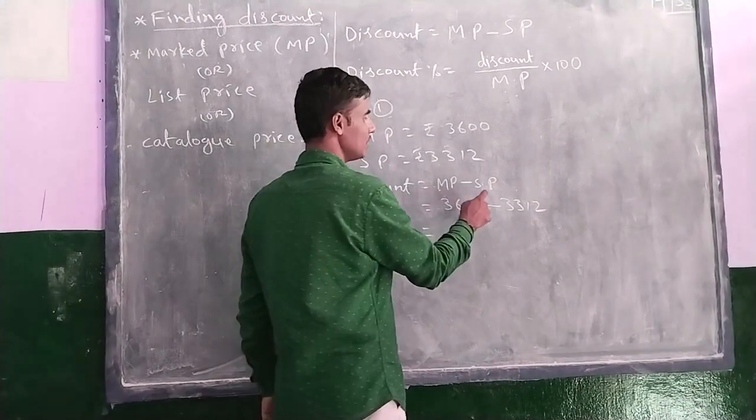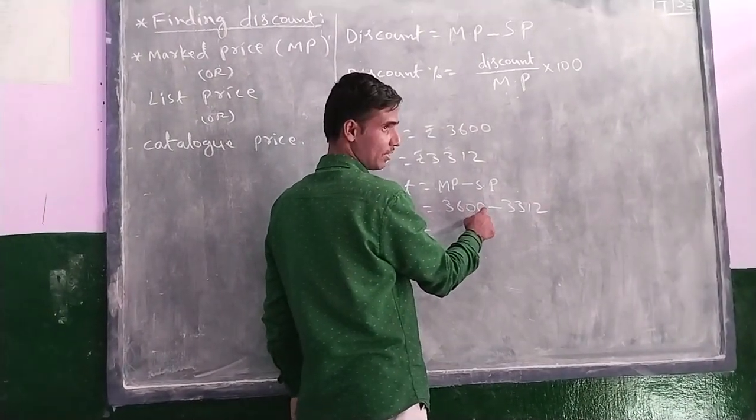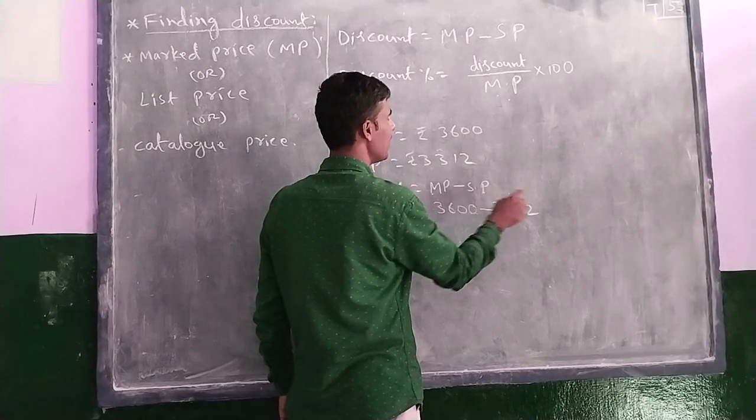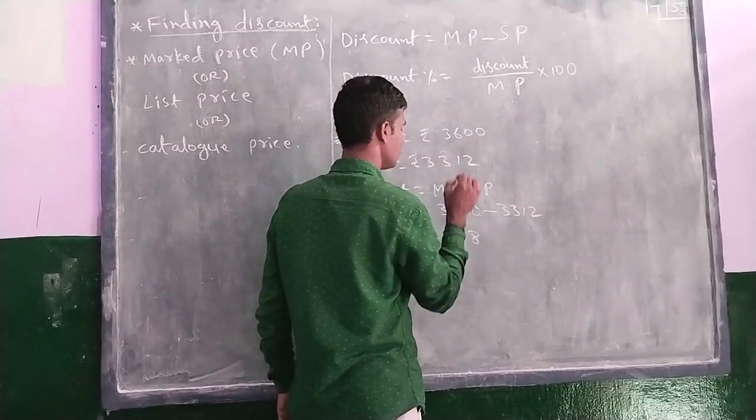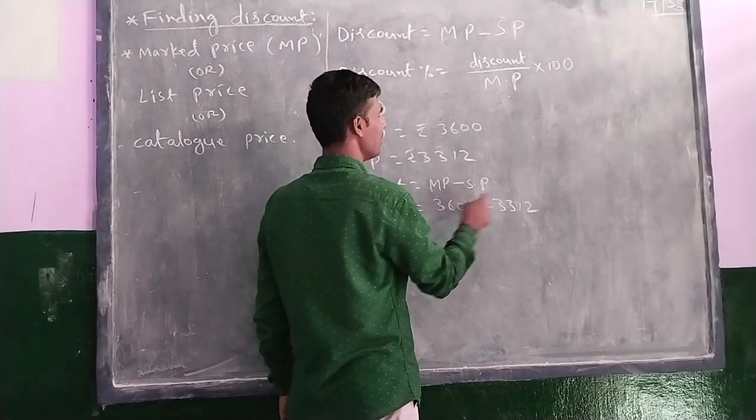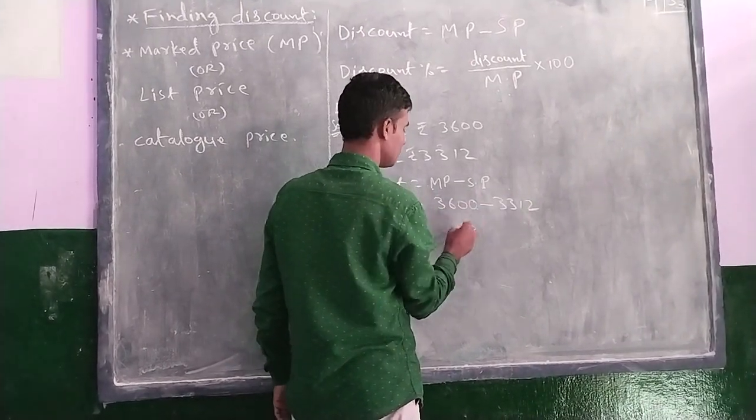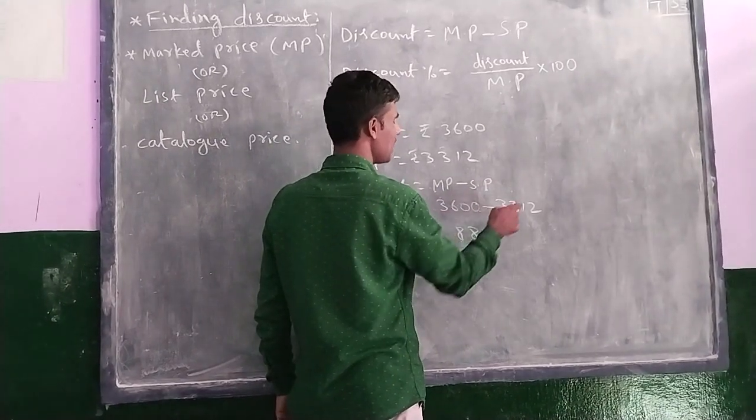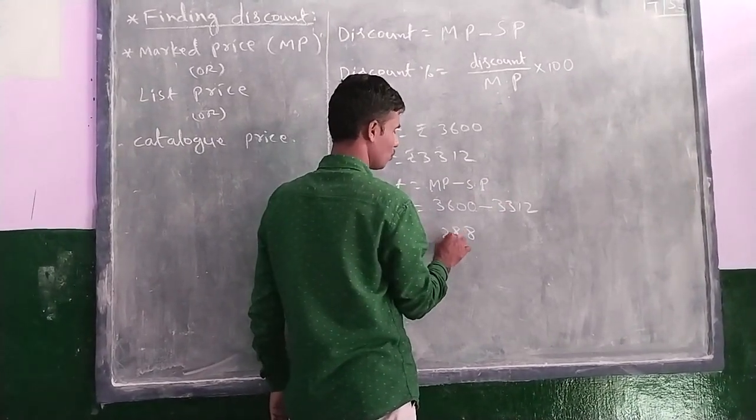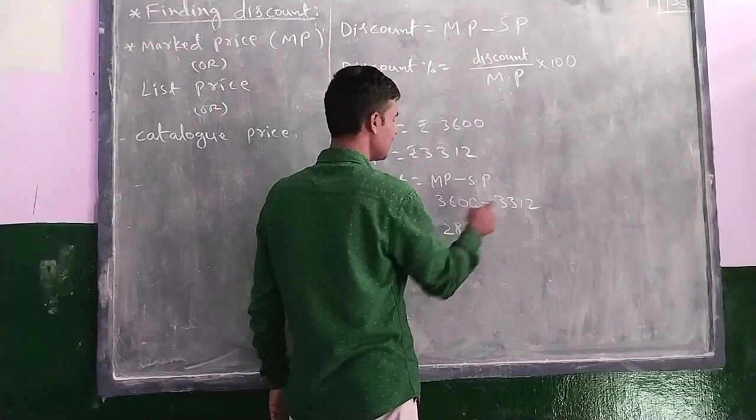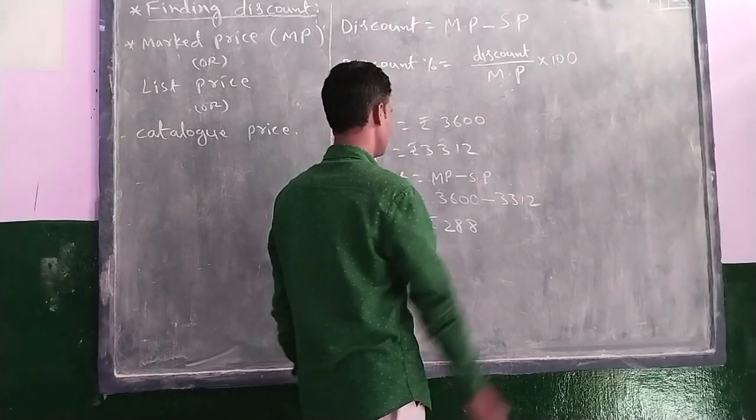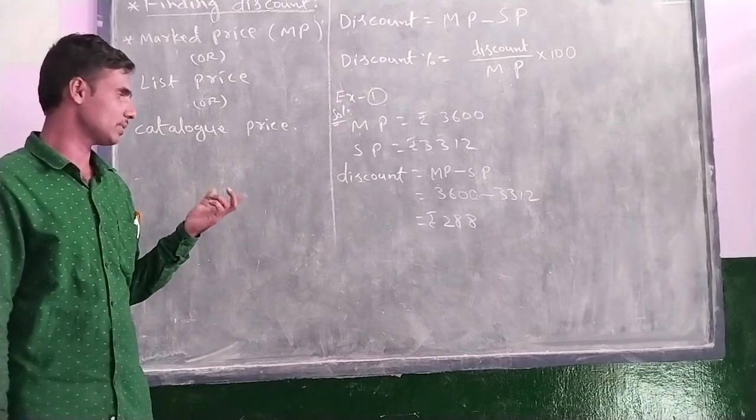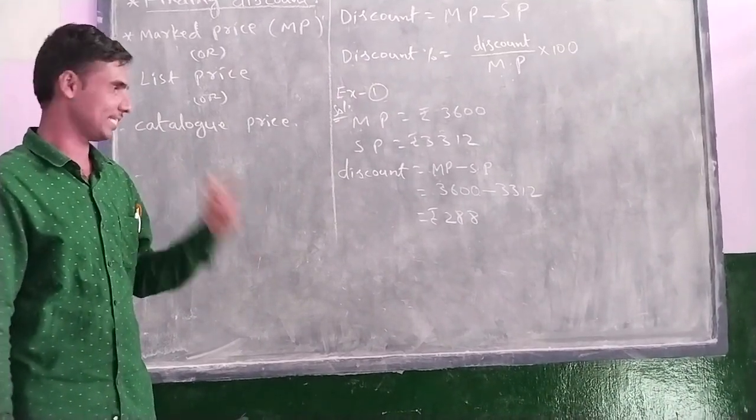Okay, now see here. 0 is there. Borrowing from here means here 10 now. 10 minus 2, how much? 8. Now here, 9 is there. 9 minus 1, how much? 8. Now here, 5 is there. 5 minus 3, how much? 2. Here, 3 minus 3? 0. Yes. Discount equal to what? 288.